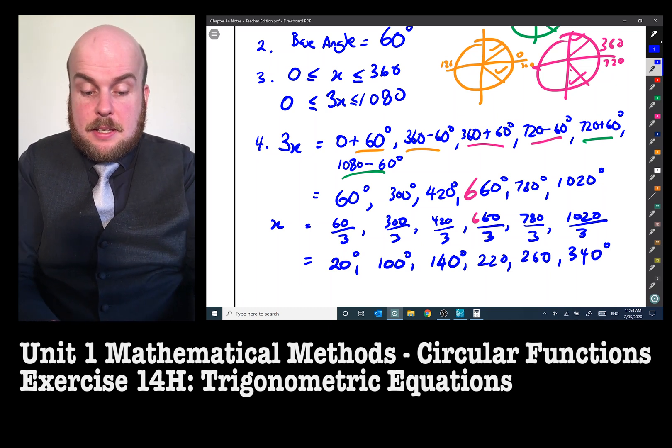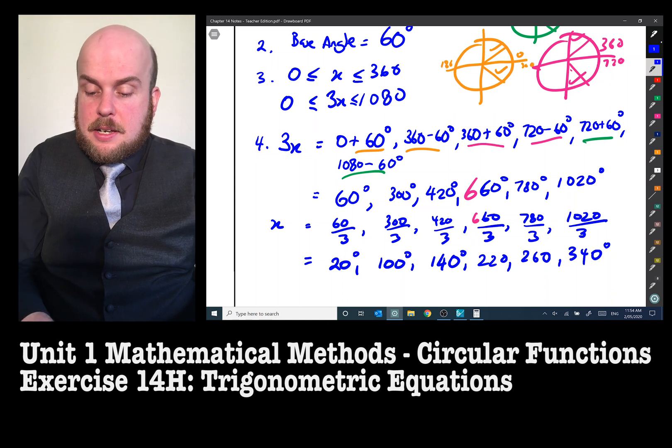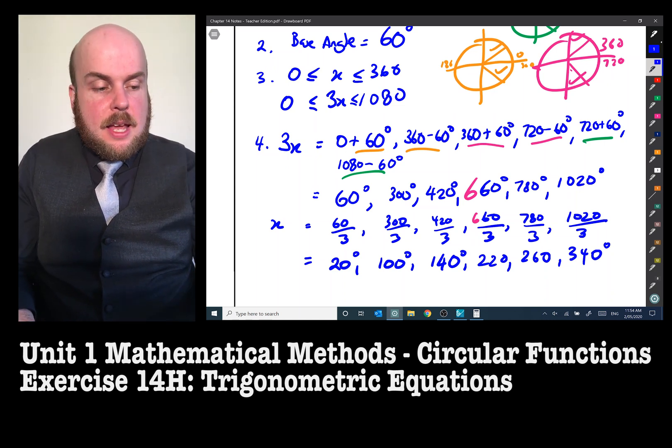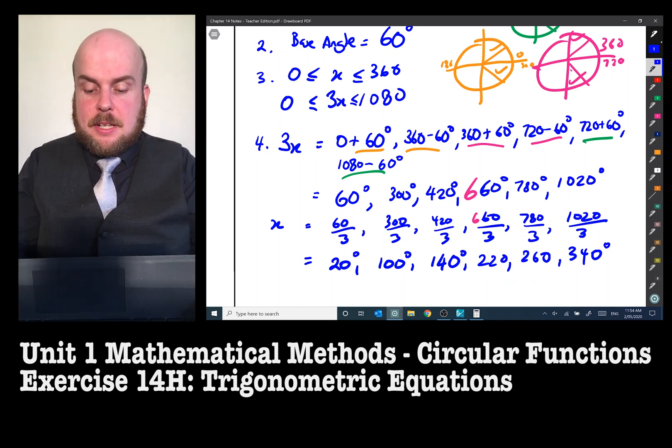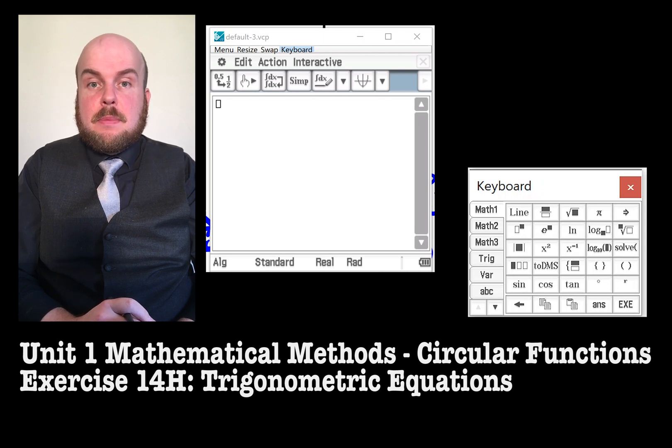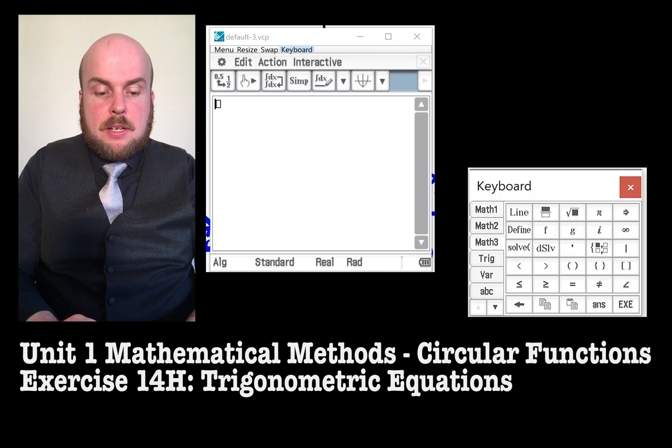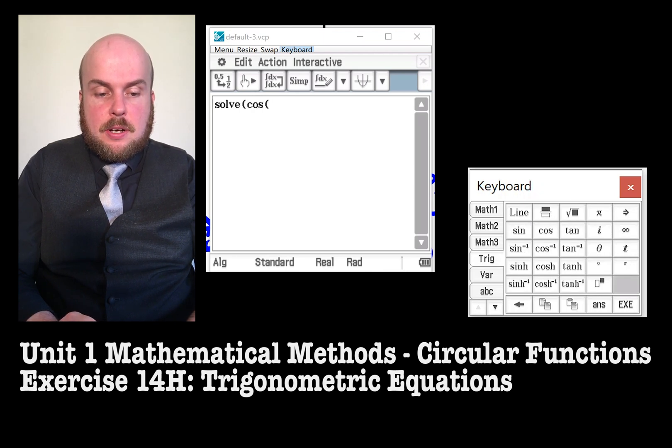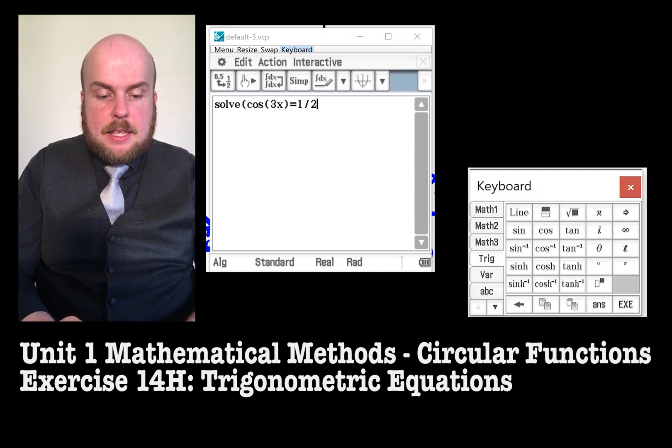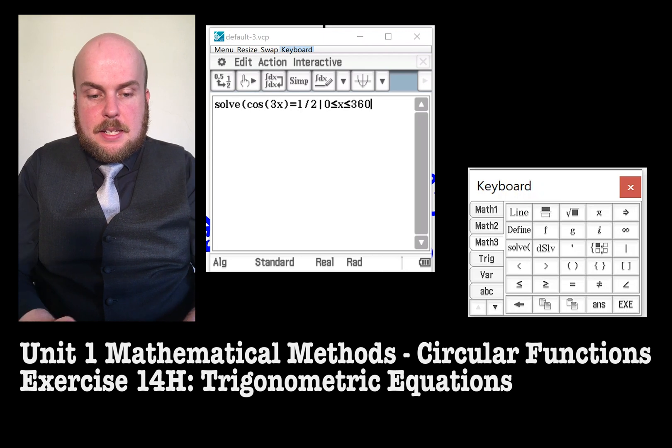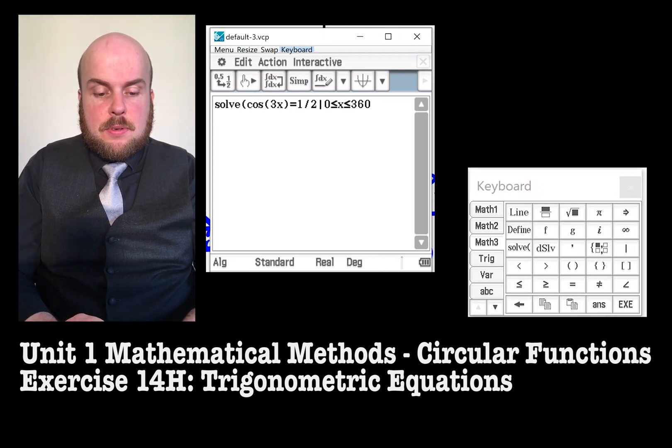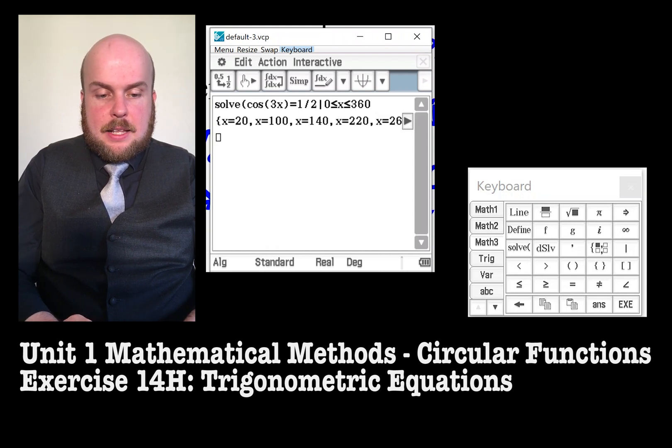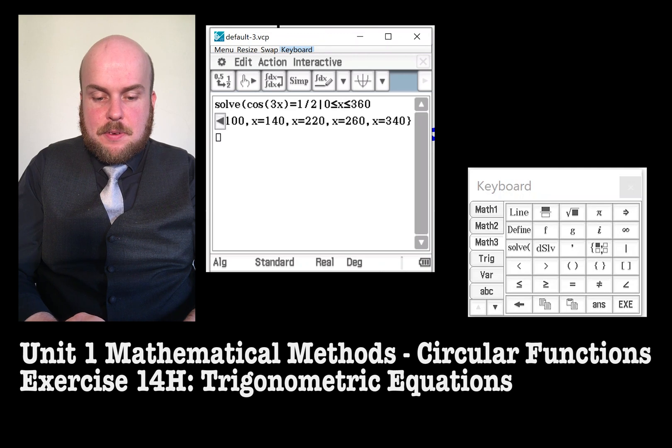Now we can check to make sure that this is right because x has to be between 0 and 360. None of our answers are outside of that original domain. And then we've also got one other foolproof method, which is using the calculator. So when solving on the CAS calculator, we also need to make sure we restrict our responses. So what we're going to do is we're going to use the solve function, and then we're going to go with trig cos 3x equals one half. And then what I'm going to do is I'm going to put the vertical line from math 3 and do zero less than x less than 360. And then I'm going to make sure to change it from radians to degrees. And let's see if we're right. 20, 100, 140, 220, 260, and 340. Thank heavens.